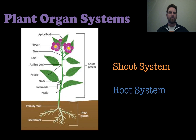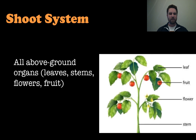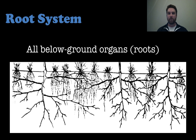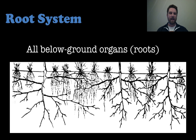There are two different organ systems within plants: the shoot system and the root system. The root system is pretty self-explanatory — it's the roots. The shoot system is pretty much everything else: all above-ground stuff, so the leaves, the stem, the flowers, the fruit if there is any, while the root system is everything below the ground. Some plants do have roots visible on the surface, but mostly they anchor and absorb nutrients from the soil.